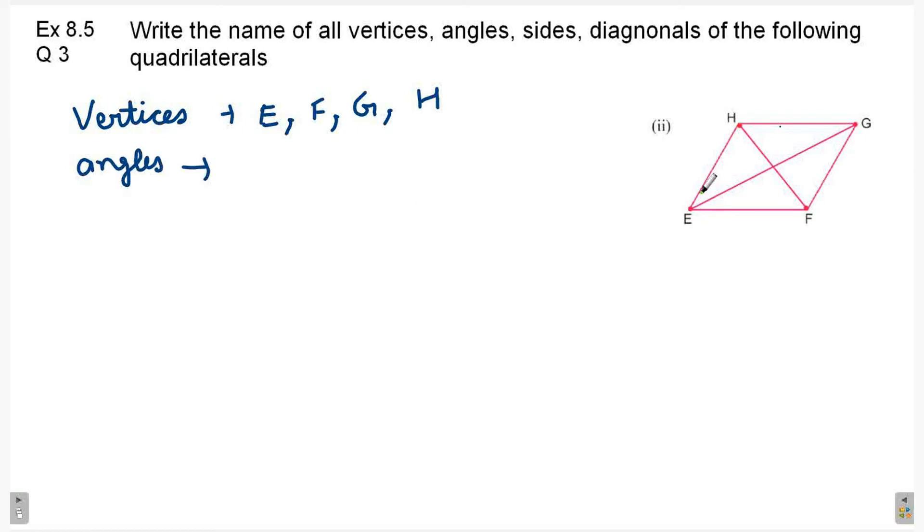Angles E, F, G, and H. So, in the simple case we can write the names using vertex. Angle E, Angle F, Angle G, and Angle H. Apart from this, you can write the same angles in a different way.